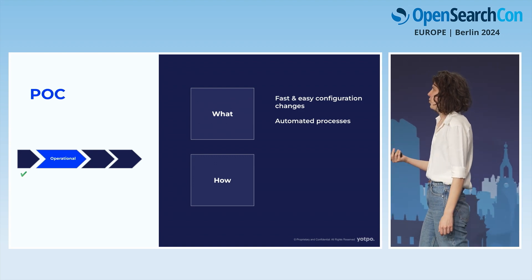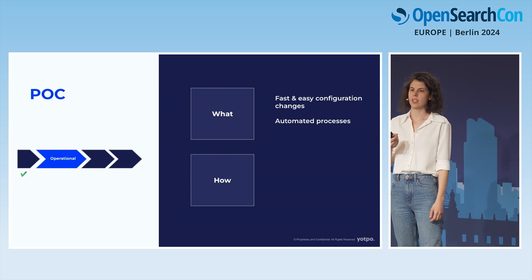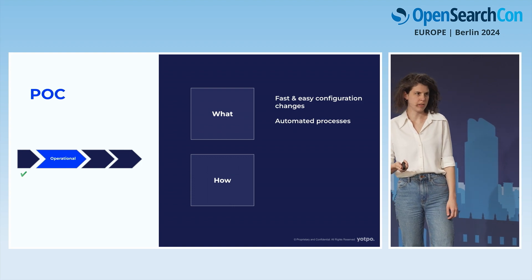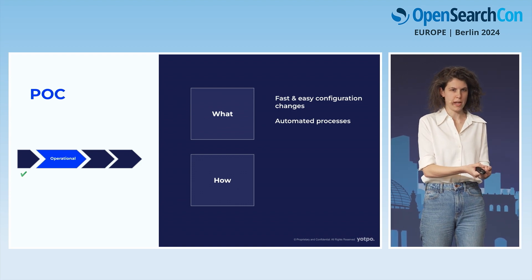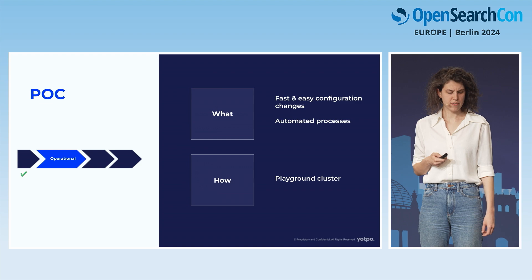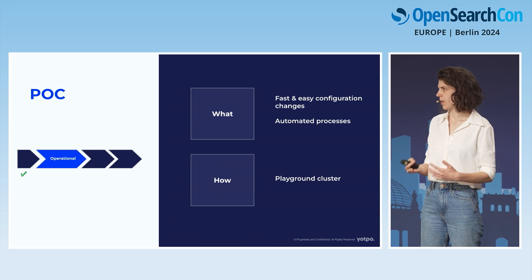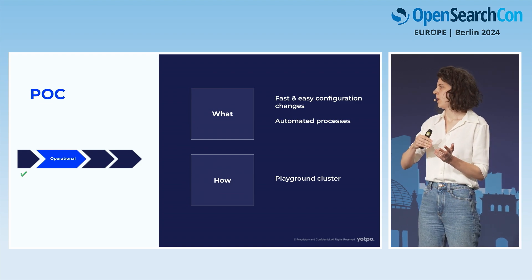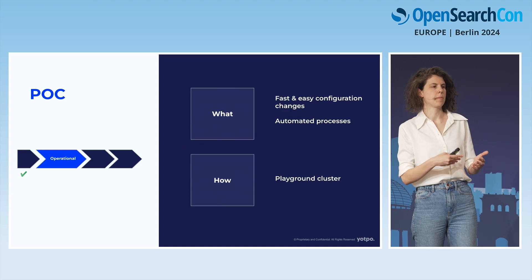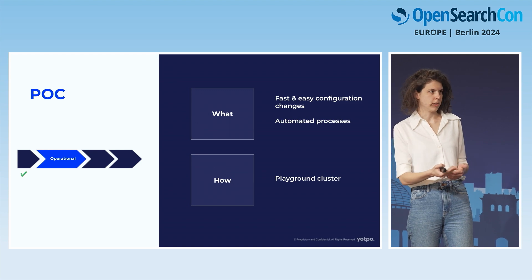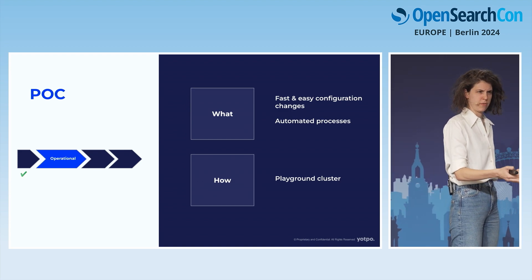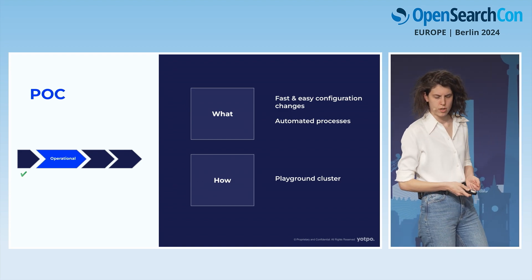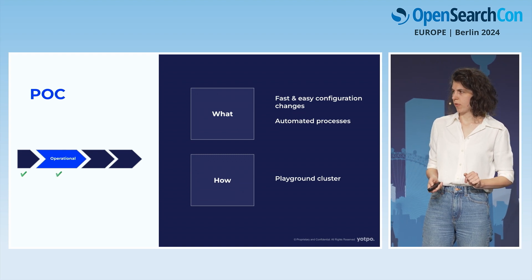For the operational phase, we wanted to confirm configuration changes were fast and easy. We launched a playground cluster, played with it for two or three days — increased storage, changed instance types, ran blue-green deployments. We used Terraform as infrastructure as code. We felt comfortable with the operational phase as well.